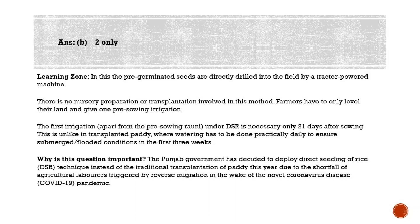Farmers are now being encouraged to adopt Direct Seeding of Rice (DSR) in place of conventional transplanting, mainly due to lack of laborers. In the transplanting paddy method, farmers prepare nurseries where the paddy seeds are first sown and raised into young plants. The nursery seed bed is five to ten percent of the area to be transplanted, and these seedlings are then uprooted and replanted 25 to 35 days later in the puddled field.